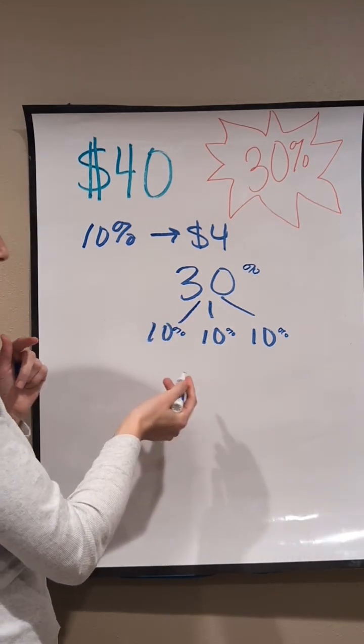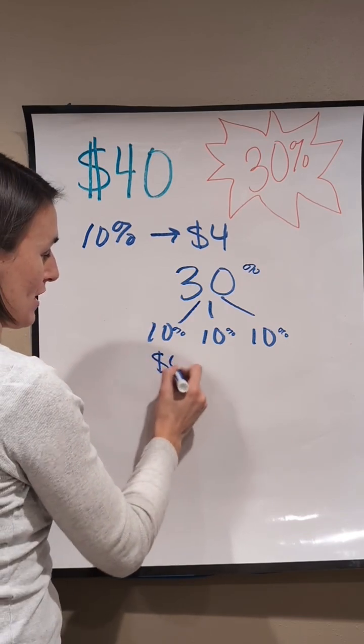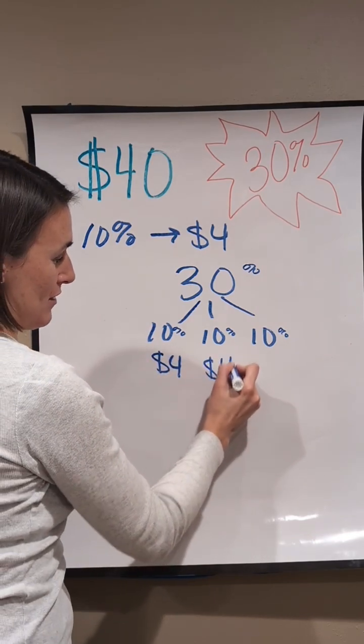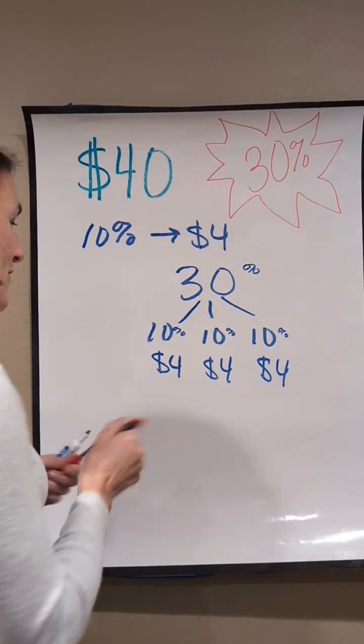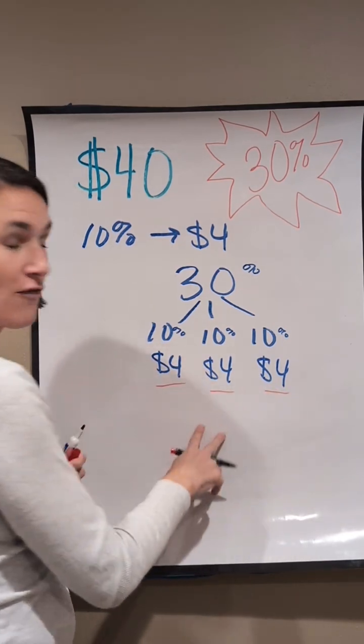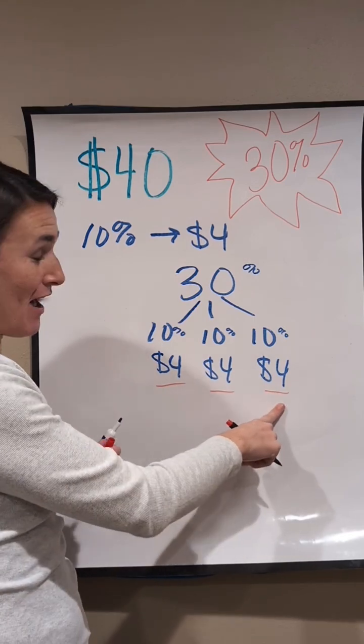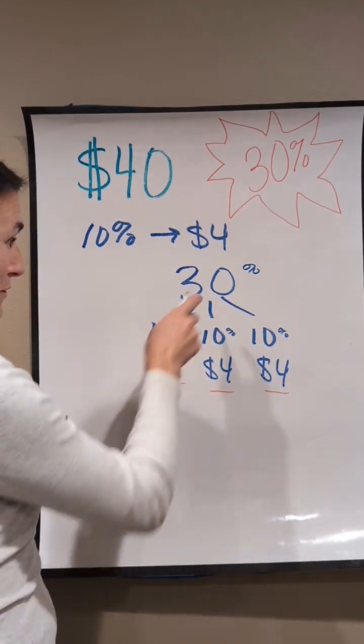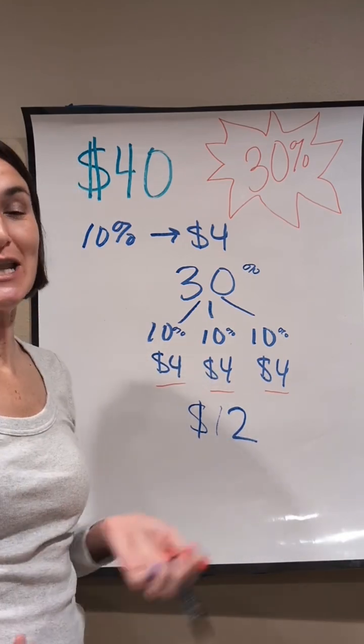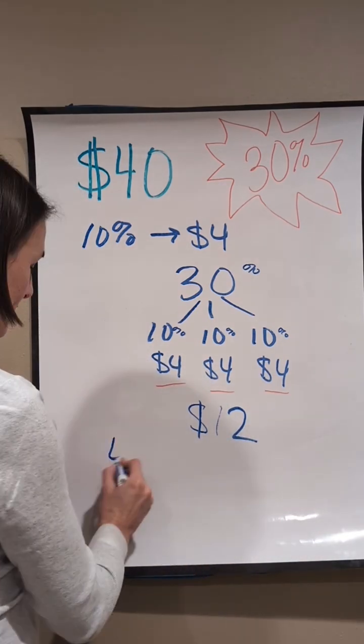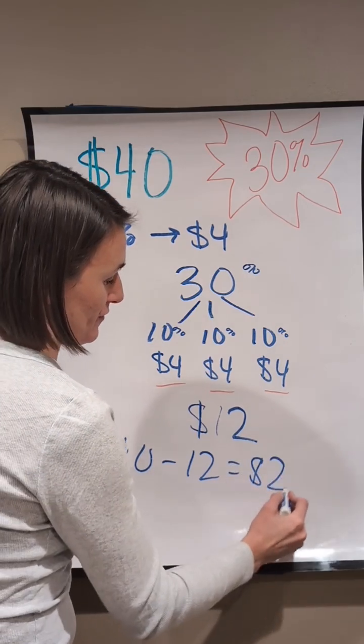So I know that 10% of $40 was $4. So I'm going to have my $4 here, $4 here and $4 here. So now I have three groups of $4 to get $4, $8, $12 off. So if something was 30% off, it would be $12 off. So then I would do $40 minus $12 to give me a new price of $28.